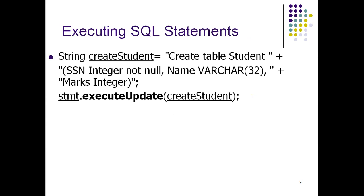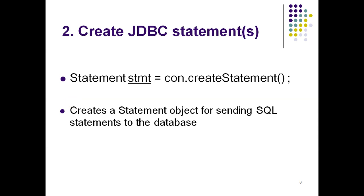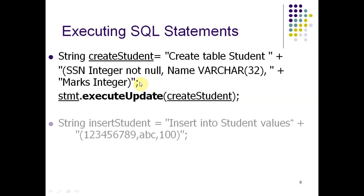Now we can create different types of SQL statements. For example, to create a table, we write a string variable: String createStudent = "CREATE TABLE student (SSN, name, marks)". To execute this, we use execute update: stmt.executeUpdate(createStudent). For CREATE and INSERT operations, we always use executeUpdate.